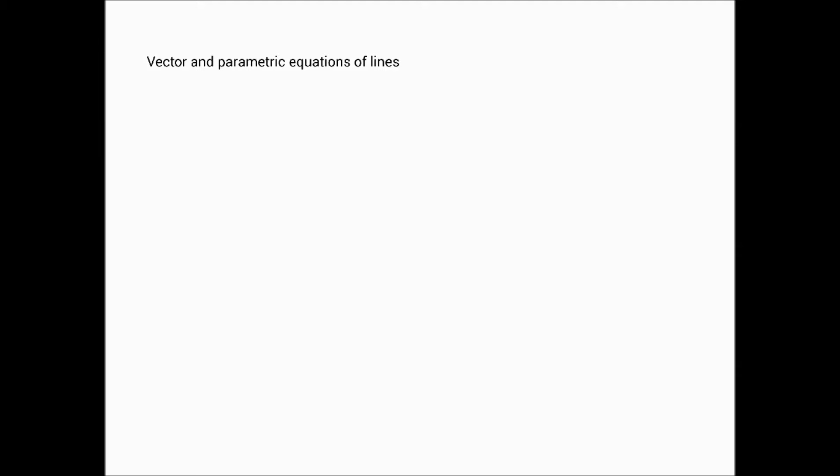Let's start with R2 for a moment, and let us assume that we have, for instance, x0, a point which we can write as a vector as well, and we want to find the equation of a line that is parallel to this vector v.